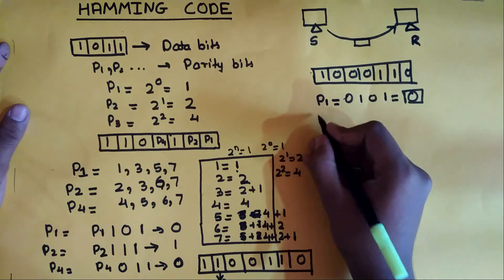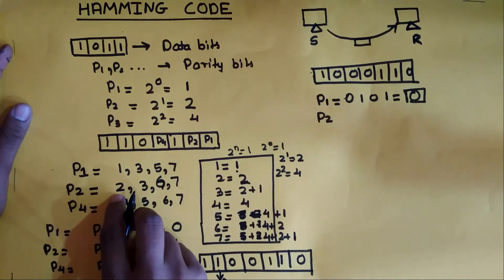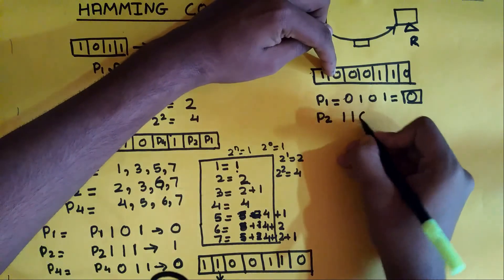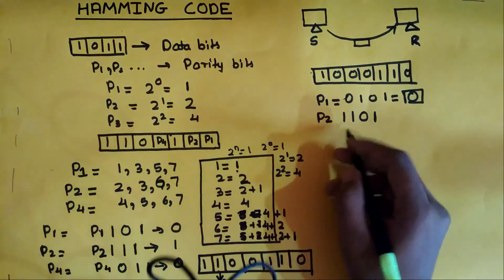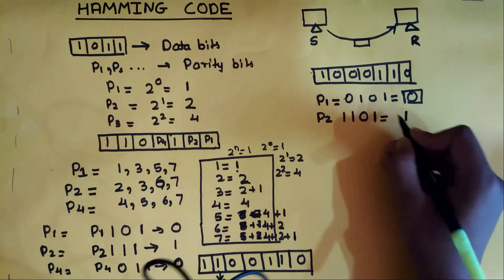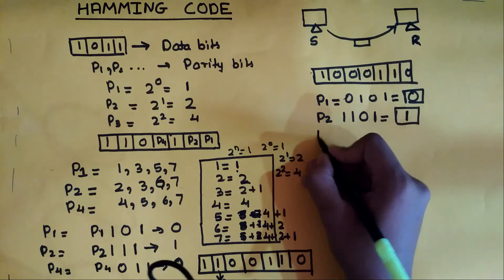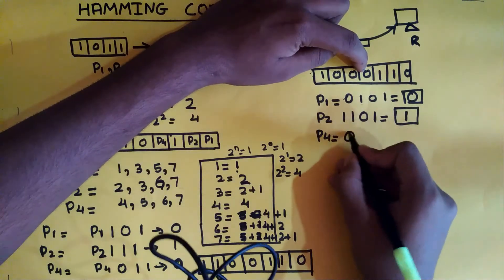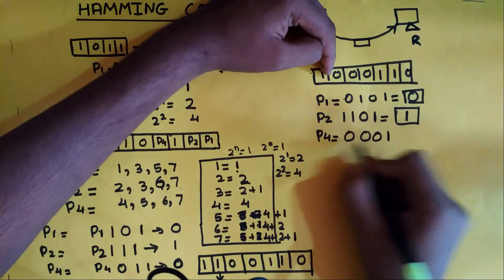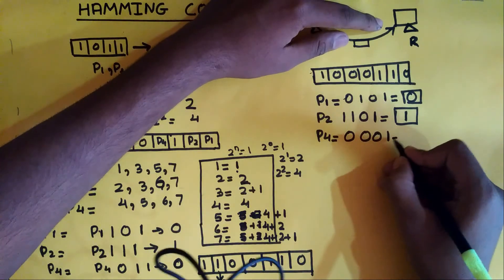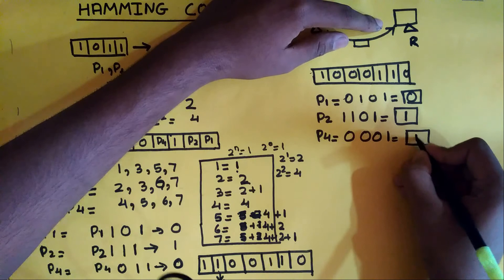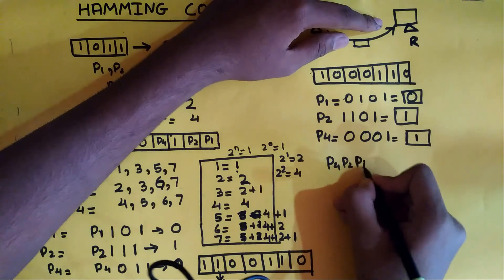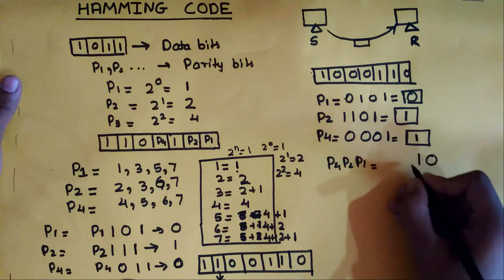For P2, the receiver looks at positions 2, 3, 6, and 7: position 2 is 1, position 3 is 1, position 6 is 0, position 7 is 1 — that's an odd number of 1s, so the receiver adds 1 to make even parity, giving P2=1. After completing all checks, the receiver obtains P1=0, P2=1, P4=1.